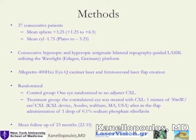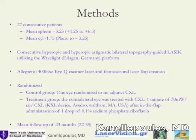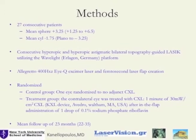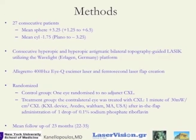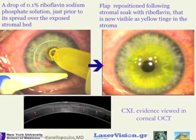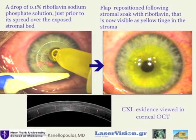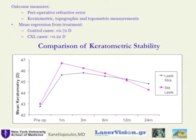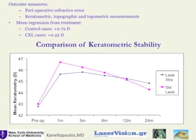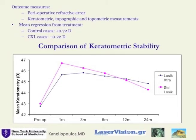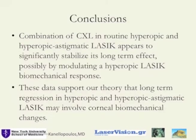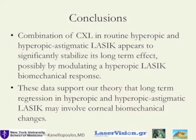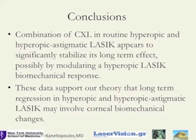Here are the methods: in 27 consecutive patients with significant hyperopia — a mean of 3.25 diopters — we randomized one eye to routine LASIK and one eye to LASIK Xtra. The pivotal part at the end of the LASIK procedure involved riboflavin soaking within the flap for 60 seconds and 60 seconds of UV treatment. A key graph shows that the LASIK Xtra eyes demonstrated significant long-term maintenance of the hyperopic effect, whereas the non-cross-linked eyes regressed. In conclusion, this contralateral eye study conclusively found that LASIK Xtra can enhance the hyperopic effect in long-term follow-up.